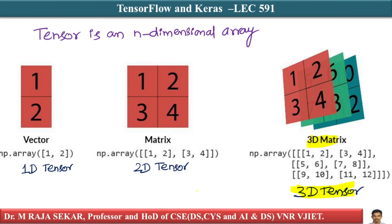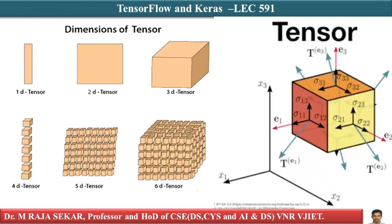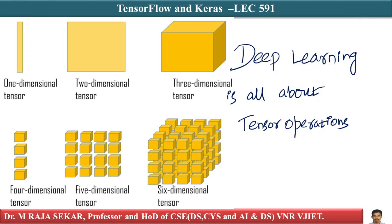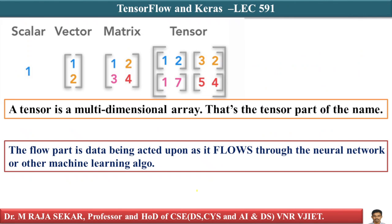In deep learning we make lots of operations on vectors, matrices, and 3D tensors. Tensor is a generalization of simple concepts like vectors, matrices, and 3D arrays. Deep learning is all about tensor operations. You can have 1D, 2D, 3D, 4D, 5D, and 6D tensors.